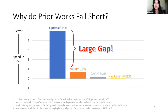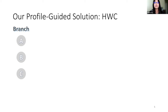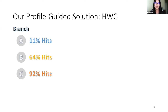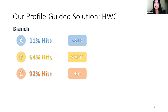Existing works fall short because they do not consider the access pattern bias among different branches. To understand why, we characterize branch access patterns with the optimal replacement policy. For each branch, we measure the BTB hit percentage under optimal replacement. Branch A has a small hit percentage, Branch C has a large hit percentage, and Branch B has a medium one. We categorize them as hot, warm, and cold — the colder the branch, the higher the probability it will be evicted in the optimal case.